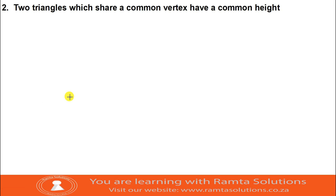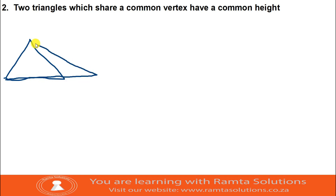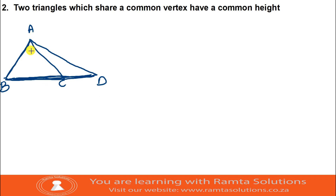The second rule is this: two triangles which share a common vertex have a common height. I'm going to show you an example. Let's say we have triangle ABCD. Remember, height is always perpendicular to the base.